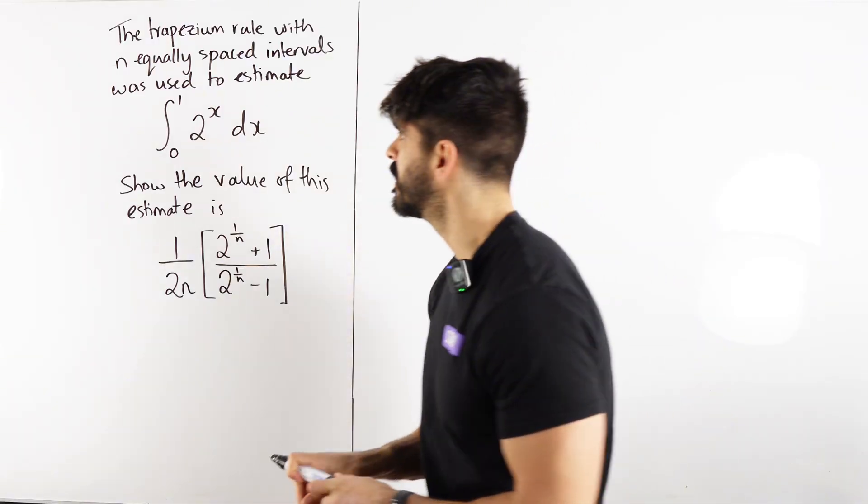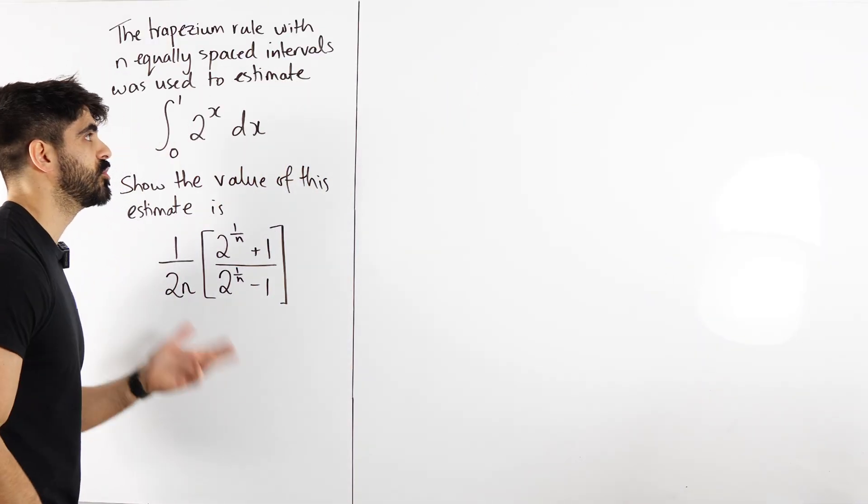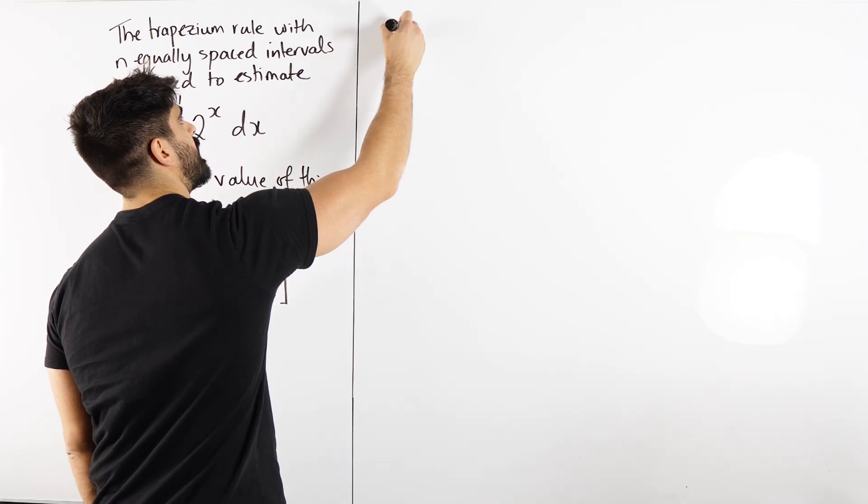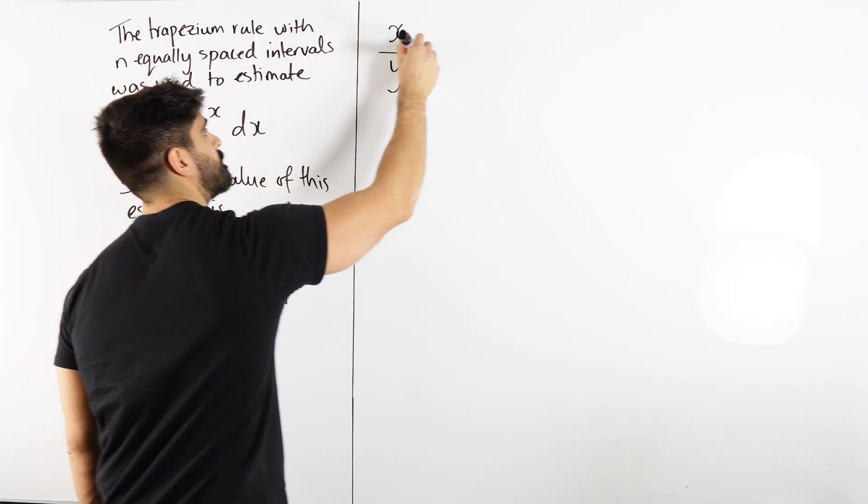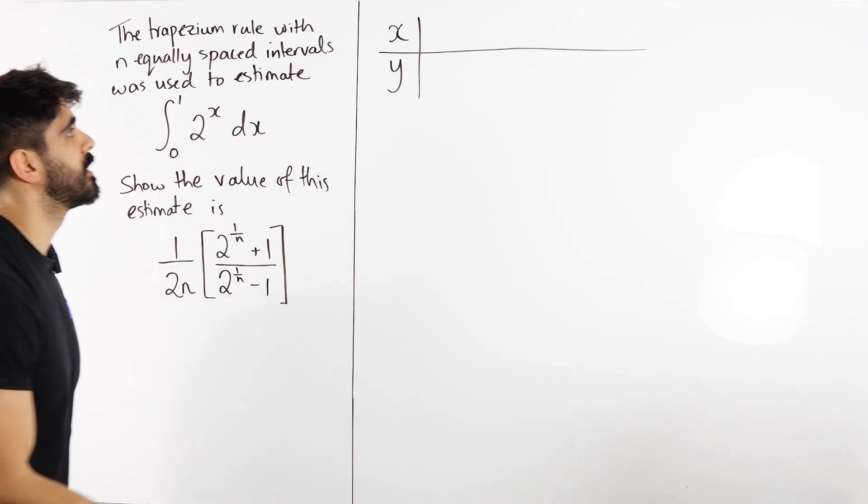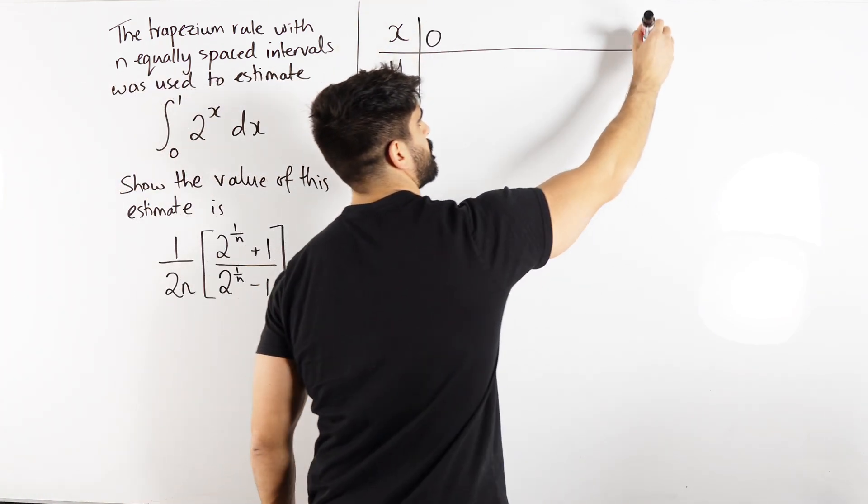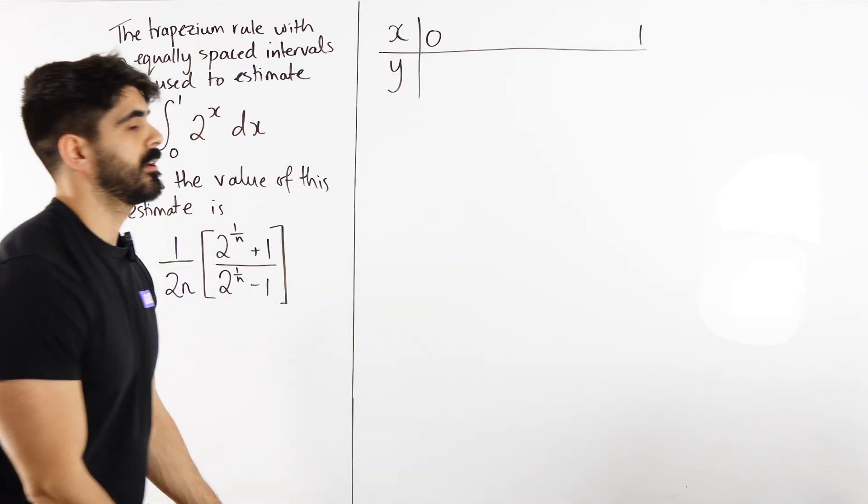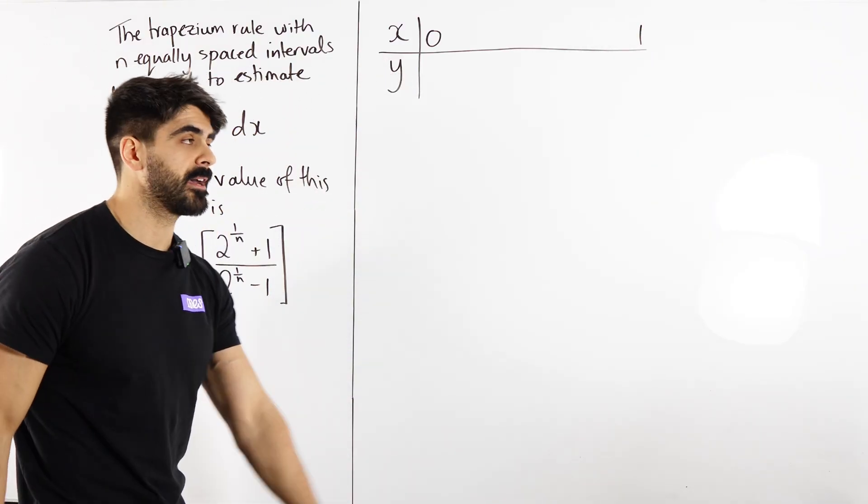So obviously let's just go about the same process. So we usually do a table. So x and y, we're going from 0 to 1. But it's all about finding a pattern here, which usually that's all maths is, is pattern recognition.